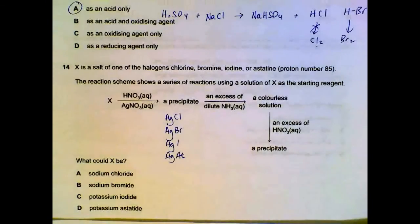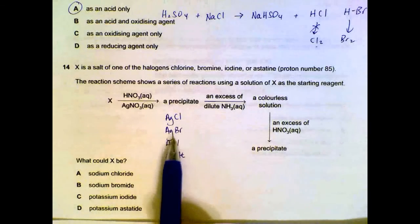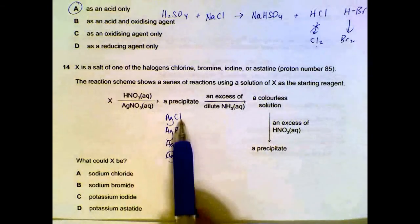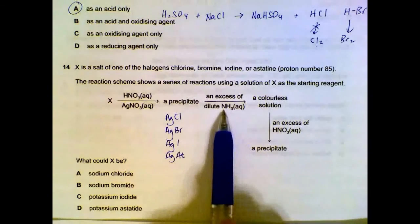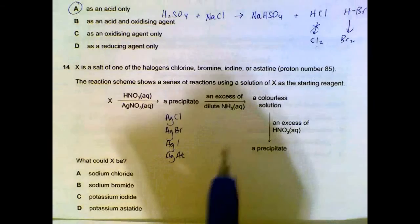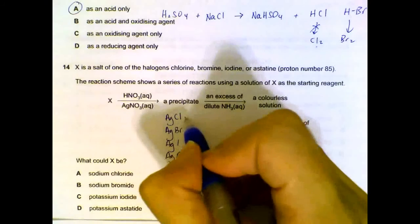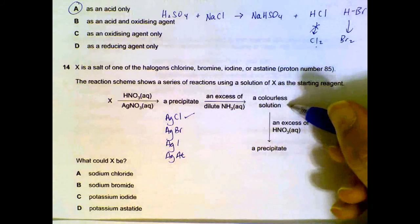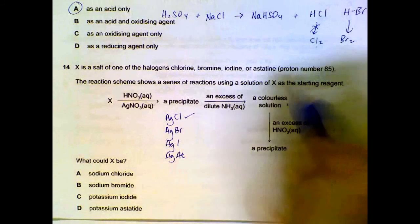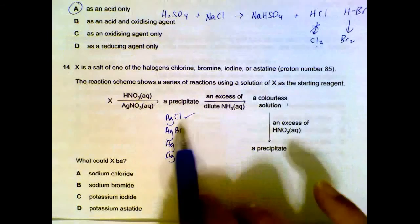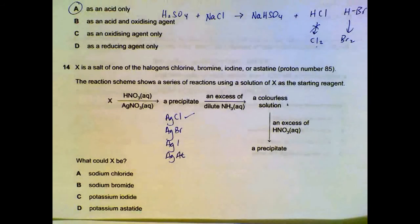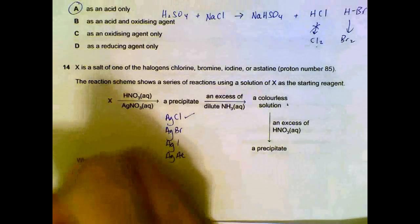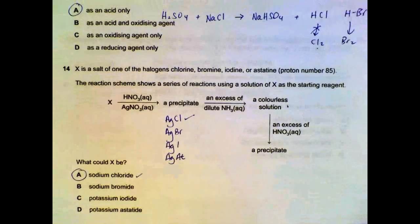Number 14. We have the precipitates of your silver halides after adding silver nitrate. And then further on, when we add dilute NH3, the only one that will dissolve to a certain extent will be your silver chloride. Because this one describes dissolving in dilute NH3. The rest don't dissolve well in dilute ammonia. So the original one must contain chlorides, in this case sodium chloride.